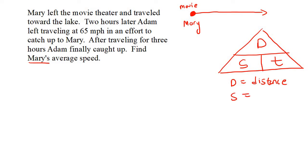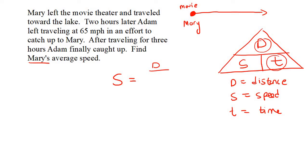Your teacher has probably shown you this, but I just want to make sure in case some of you haven't seen it. T is time. The way it works: let's choose S. We can say S equals — now look at D, it's at the top, so we put it at the top. Look at T, it's at the bottom. So we say D over T. Now let's choose T. T is equal to — look at D at the top, and S is underneath. It's almost like a divide sign. So T is equal to D over S.